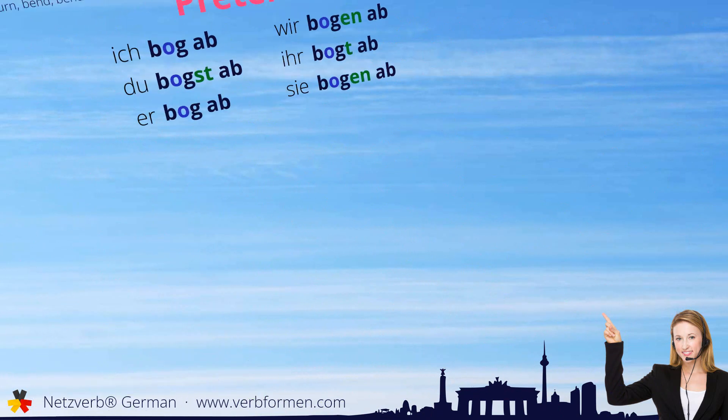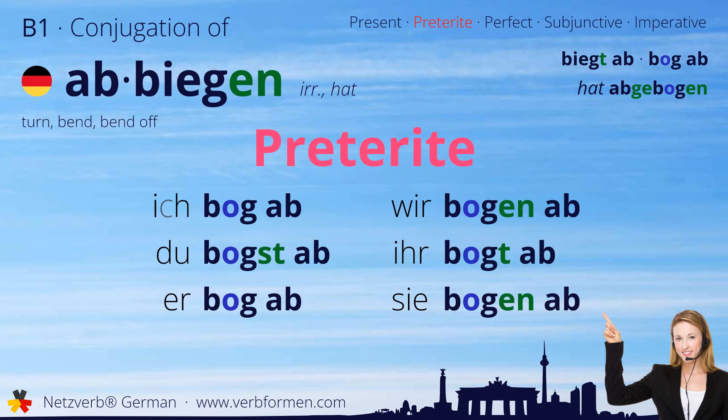Next up is the preterite. Ich bog ab. Du bogst ab. Er bog ab.